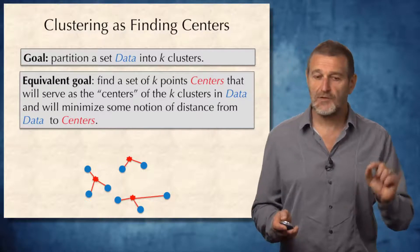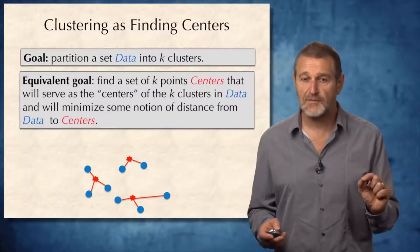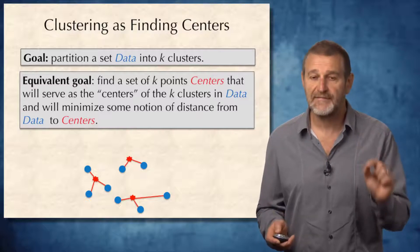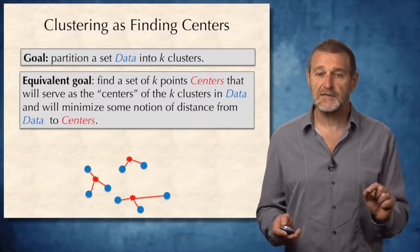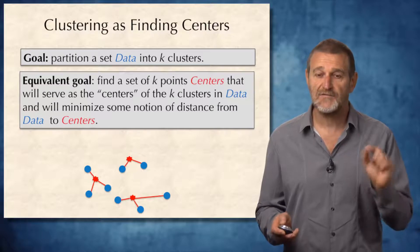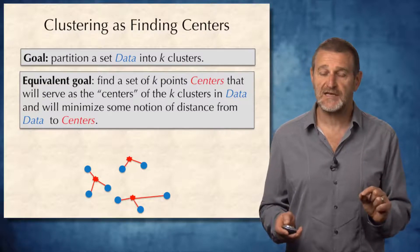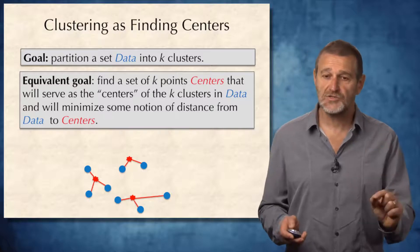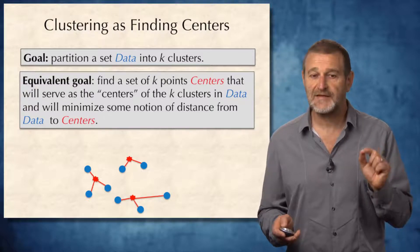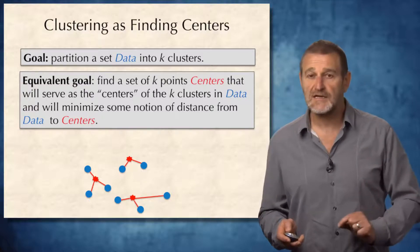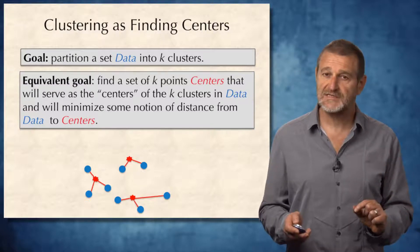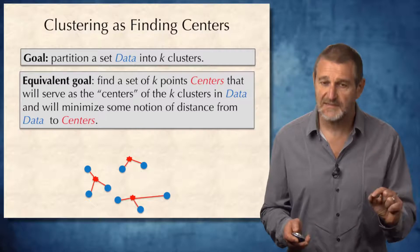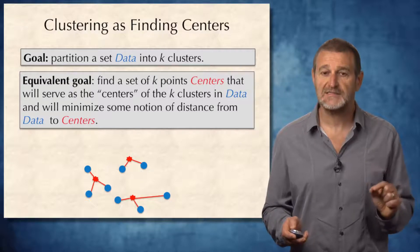For example, you can see a dataset consisting of eight blue points and three points representing centers of clusters for this dataset. Our goal is to come up with a notion of distance between data and centers, and then find centers that minimize this distance.